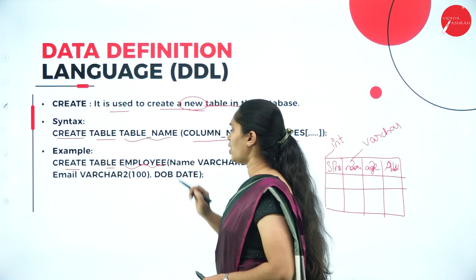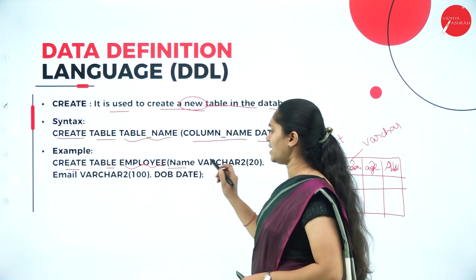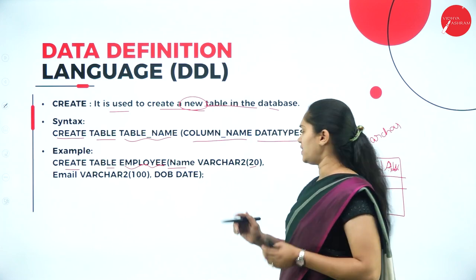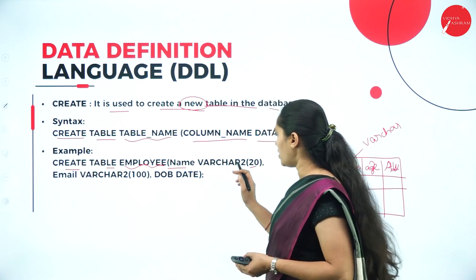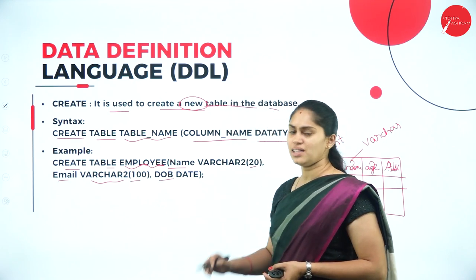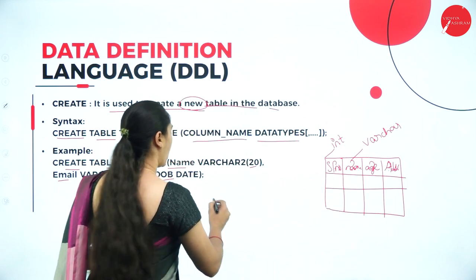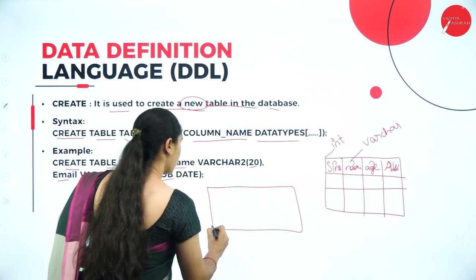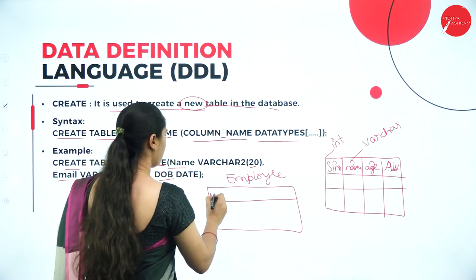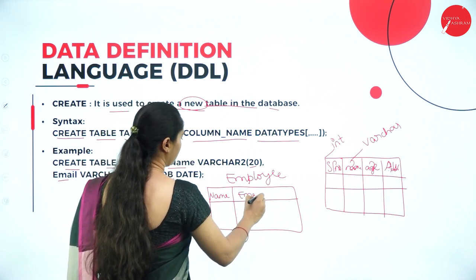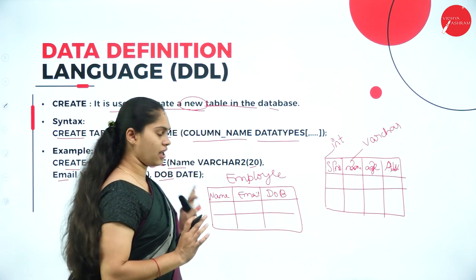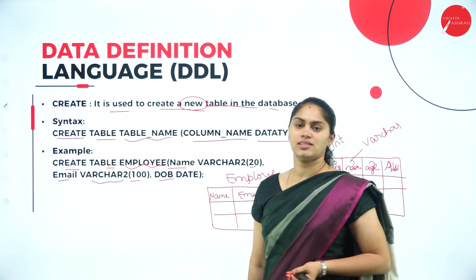Looking at the example: CREATE TABLE employee — the table name is employee and it has three columns. First is name with data type VARCHAR(20), then email with VARCHAR(200), and then date_of_birth with data type DATE. The resulting table will have the name employee with columns: name, email and date_of_birth. The data is not yet filled — we are just creating the table structure.